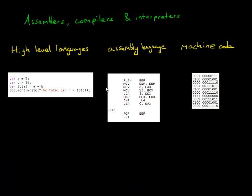In this video, we're looking at three things which are assemblers, compilers, and interpreters. These three things are all types of translator. They're taking one language and converting it, translating it into another language.